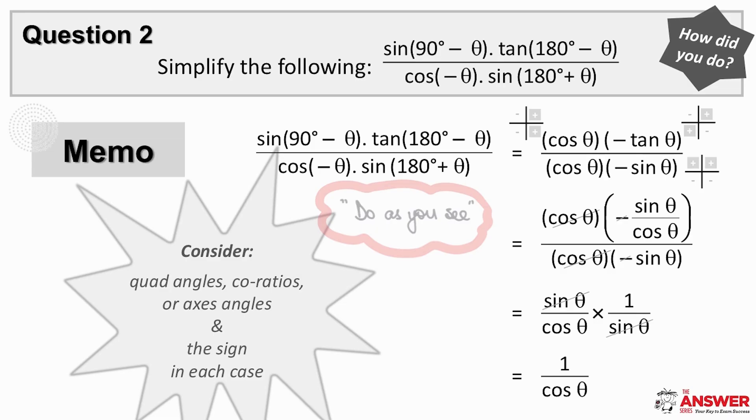You will start to see through doing these examples how important knowing and understanding your theory is. Again, we start top left. Sine of 90 minus theta reduces to its co-ratio cos theta.